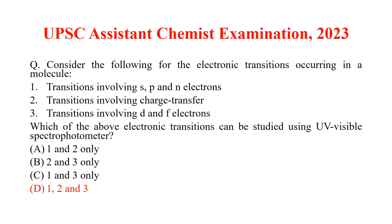The next question is: consider the following electronic transitions occurring in a molecule — transitions involving sigma, pi, and N electrons (where N means non-bonding electrons), transitions involving charge transfer, and transitions involving D and F electrons. Which of the above can be studied using a UV-visible spectrophotometer? The answer is option D — all three, that is 1, 2 and 3. All of these transitions can be studied in electronic spectroscopy.